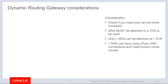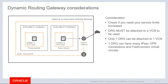Some DRG considerations: before we provision that dynamic routing gateway, we want to make sure to check our service limits to ensure that we have the capacity to create the DRG. The dynamic routing gateway must be attached to a VCN, and it's a one-to-one relationship — one VCN, one DRG. The DRG can have numerous outbound connections, however. This could include multiple VPN connections, multiple FastConnect virtual circuits, or even multiple remote peering connections to other OCI regions.